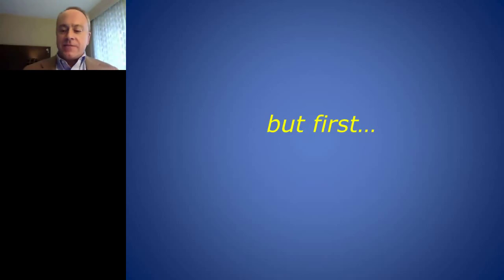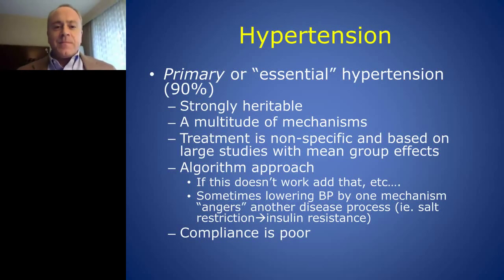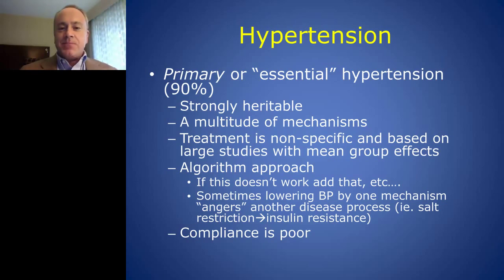First, let's talk a little about hypertension in general. We categorize this into two sections. Primary, or essential hypertension, represents about 90% of the hypertensive population. It is strongly heritable with a host of mechanisms responsible. The treatment is nonspecific, based on large studies with mean group effects — essentially an algorithm approach. If one medication doesn't work, you add a second one.